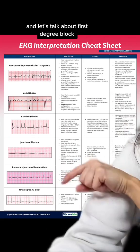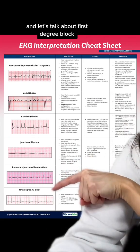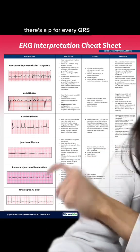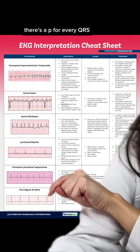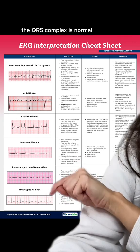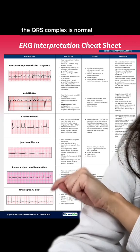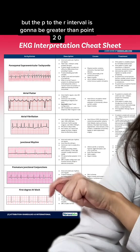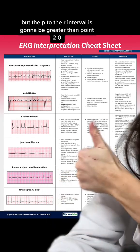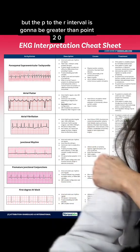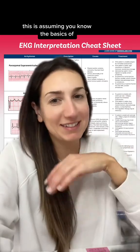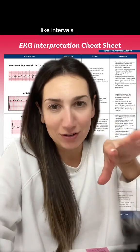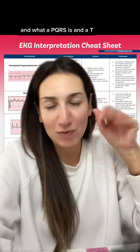Junctional rhythm is regular but the P waves are technically absent. First degree block — there's a P for every QRS, the QRS complex is normal, but the PR interval is going to be greater than 0.20. This assumes you know the basics of intervals and what a P, QRS, and T wave are.